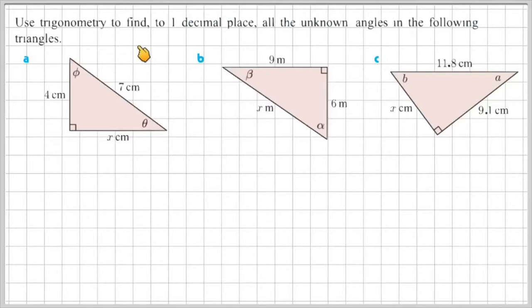So it says, use trigonometry to find to one decimal place all the unknown angles of the following triangles. Pause the video here and try all three questions for yourself, and when you're ready, press play and I'll show you the work solutions.